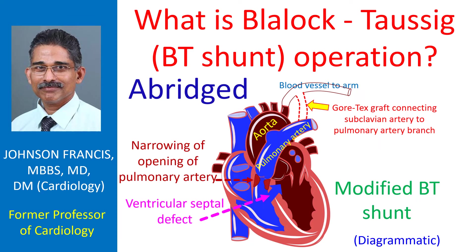Blalock-Taussig shunt is an operation done to improve the oxygen levels in blood of children with certain birth defects of the heart. A typical example is Tetralogy of Fallot, which has four defects: a ventricular septal defect, narrowing of the opening to the pulmonary artery known as pulmonary stenosis, thickening of the wall of the right ventricle, and overriding of the ventricular septal defect by the aorta.